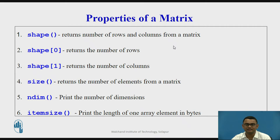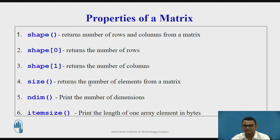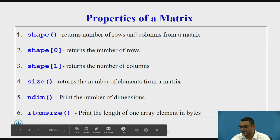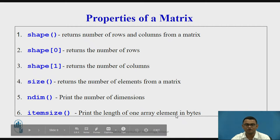Let us look at some of the properties of a matrix. Shape returns the number of rows and columns. shape[0] returns the number of rows, shape[1] returns the number of columns, and 0 and 1 are called axes. Size returns the number of elements. ndim prints the number of dimensions, and itemsize prints the length of one array element in bytes.